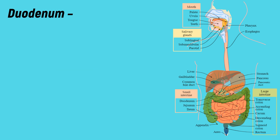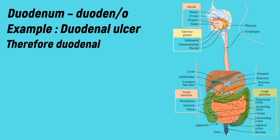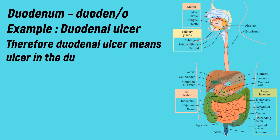Duodenum: the medical term for duodenum is 'duodeno'. Example: duodenal ulcer. Duodenal ulcer means an ulcer in the duodenum.